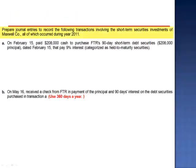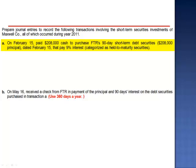Exercise 1. Prepare journal entries to record the following transactions involving the short-term securities investments of Maxwell Company, all of which occurred during year 2011. Letter A: on February 15th, paid $208,000 in cash to purchase FTR's 90-day short-term debt securities, $208,000 principal amount, dated February 15th, that pay 9% interest, categorized as held-to-maturity securities.